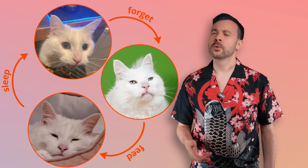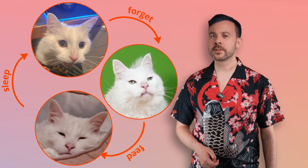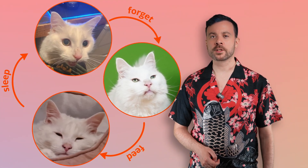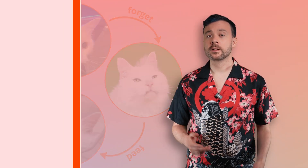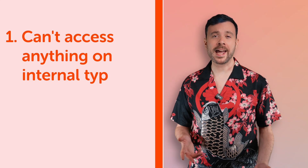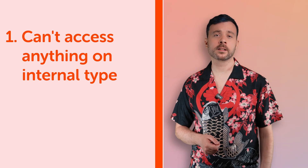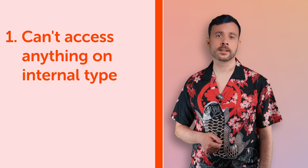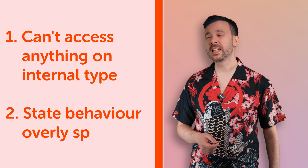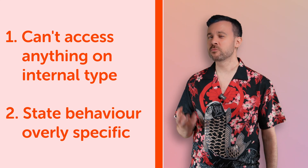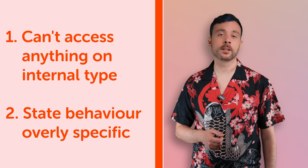Last time I showed you how to add functionality to types by building a state machine for my cat Yuki. We identified a couple of issues with the state machine though. First, we couldn't access anything on the cat type from inside our generic states. Second, behaviors didn't seem generally applicable.